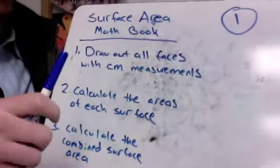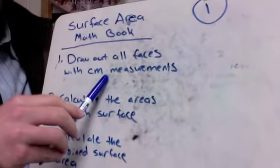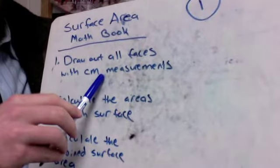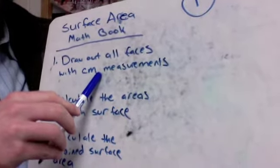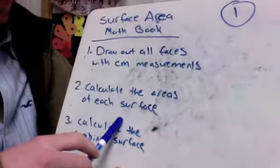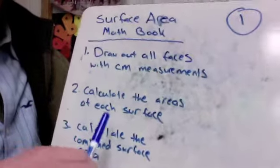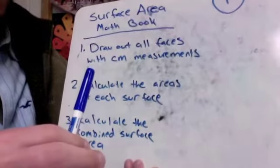What I want you to do is draw out all the faces with their centimeter measurements on it. If you think about it, the math book is going to have six faces. We're counting everything as a face around the outside. Calculate the areas of each surface individually and then give me the total surface area all together.